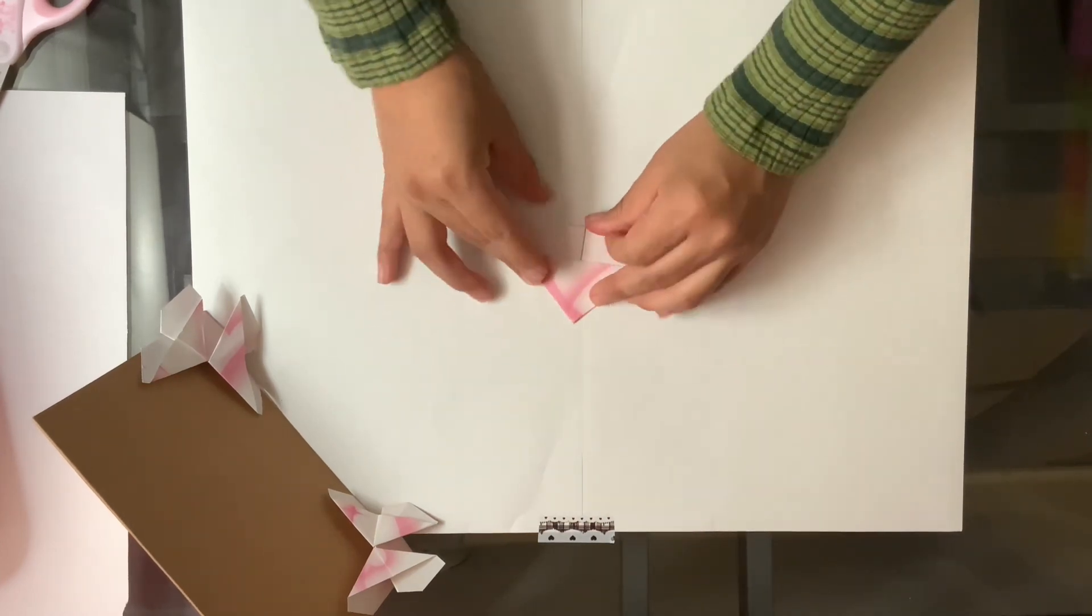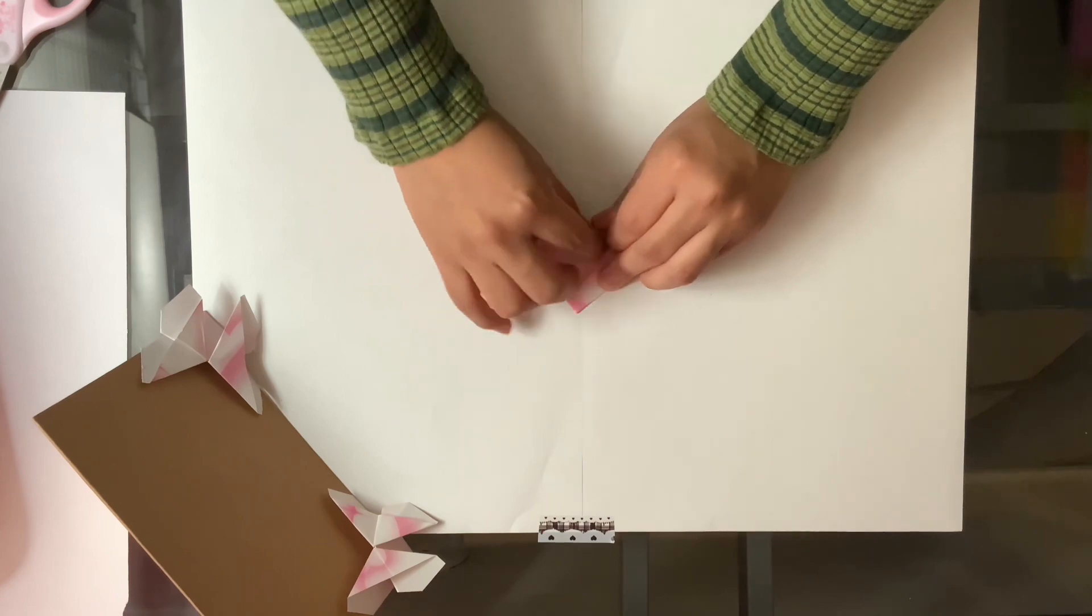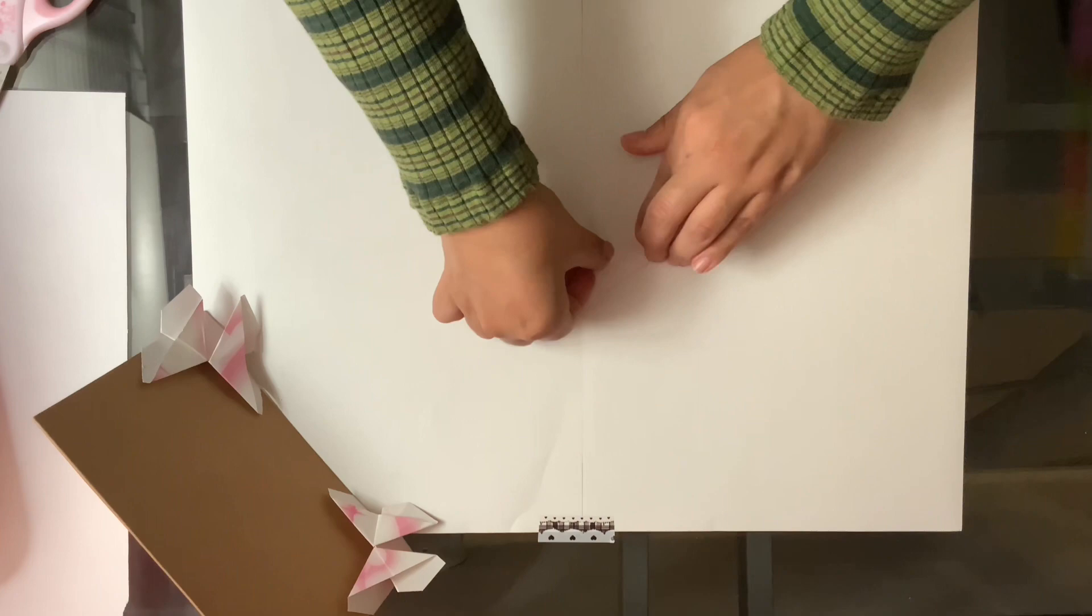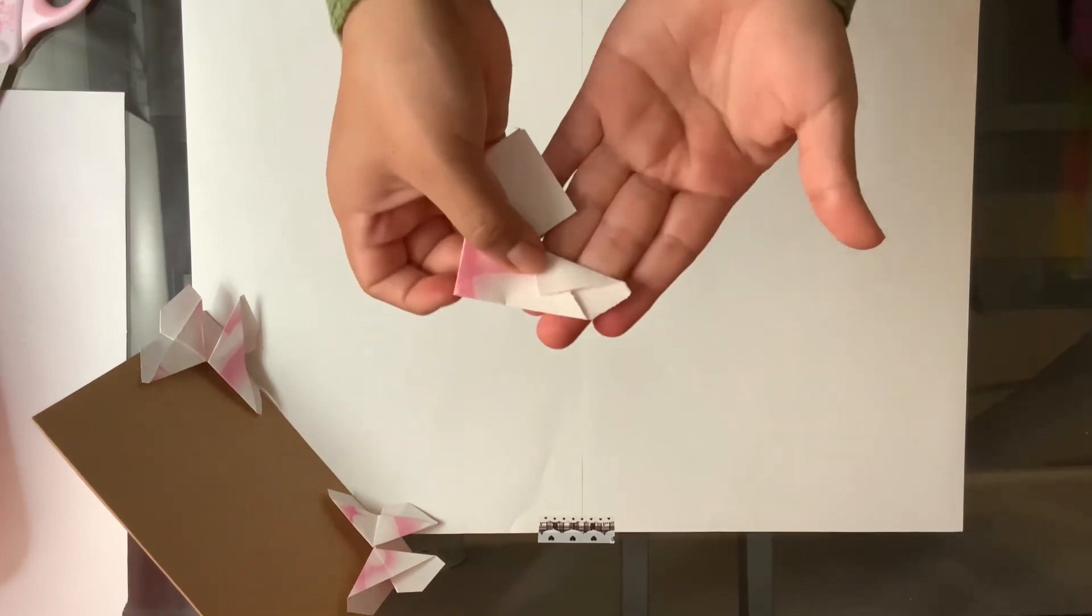Now you're going to take the inner corner of one of these little legs and you're going to fold it. You want to make sure that you leave at least half a centimeter of space at the end like this.